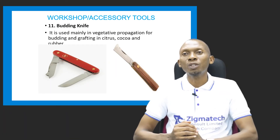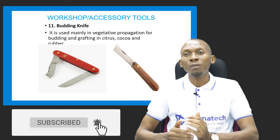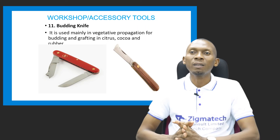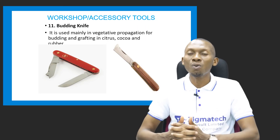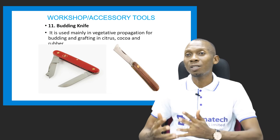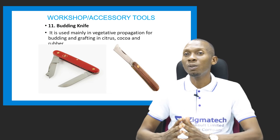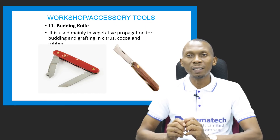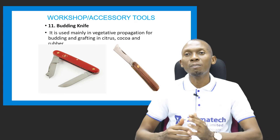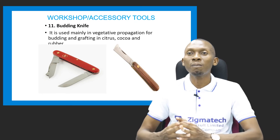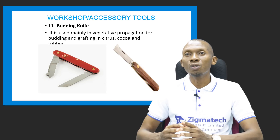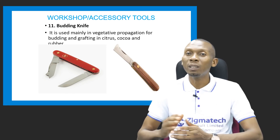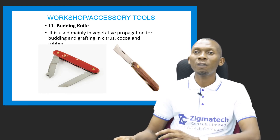The budding knife is another accessory tool used to carry out vegetative propagation — specifically budding and grafting — in tree crops like citrus, cocoa, and rubber. Vegetative propagation is asexual propagation using vegetative parts of the plant such as the stem, leaves, or roots, rather than seeds.